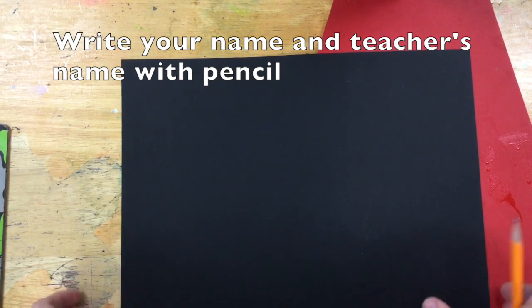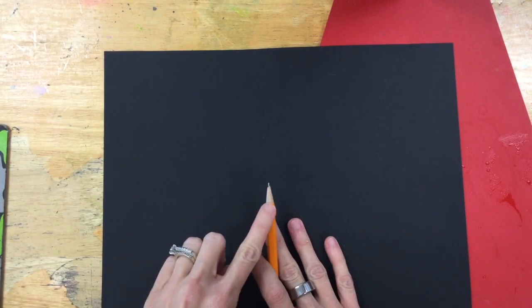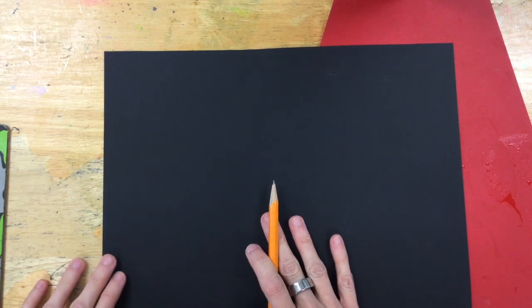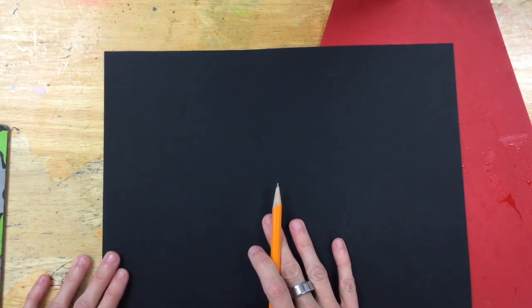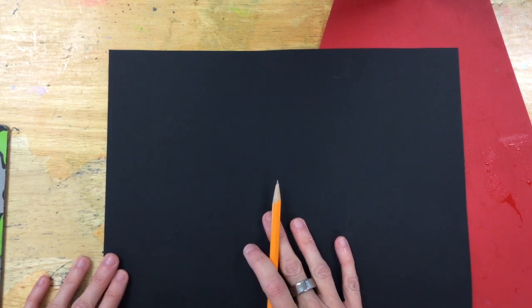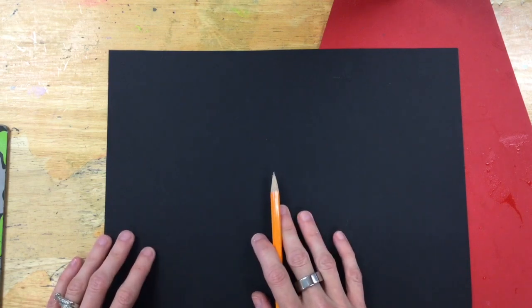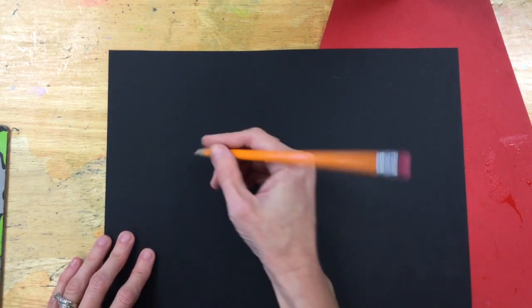The first thing we're going to do is take our black paper and we're going to use a pencil or a white crayon to write our name and our teacher's name on the back. Even though it looks like you can't see because it's black paper, it's kind of magic. So let's write our name.